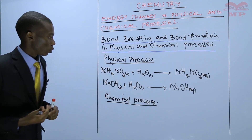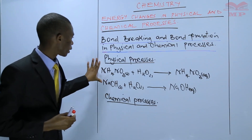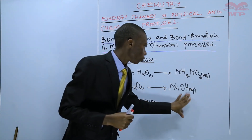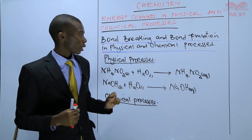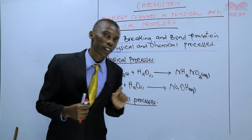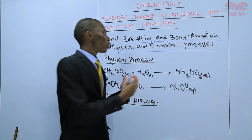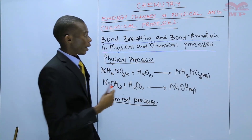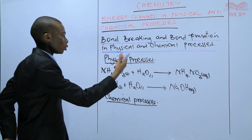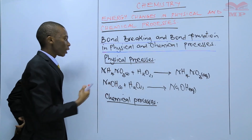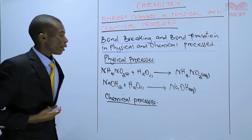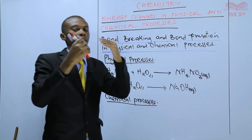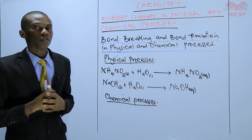Just before I start the chemical processes, I need to tell you that the reason why we are saying that these are physical processes is because you have gotten their solutions — the ammonium nitrate solution and sodium hydroxide solution. You can evaporate the sodium hydroxide and ammonium nitrate, getting sodium hydroxide solid and ammonium nitrate solid back, because the water will have evaporated. So it is a reversible reaction.